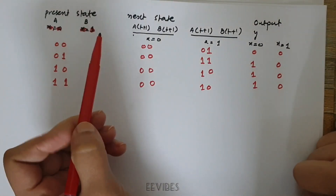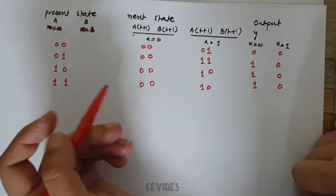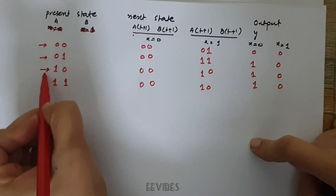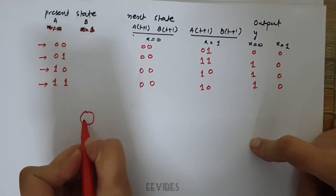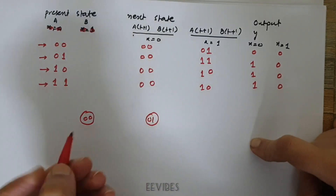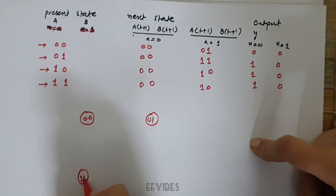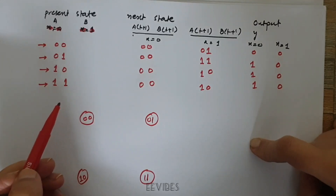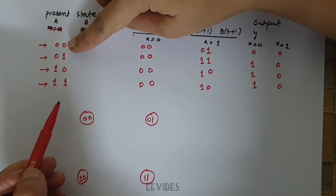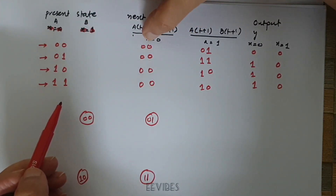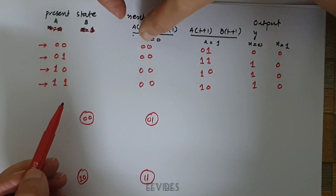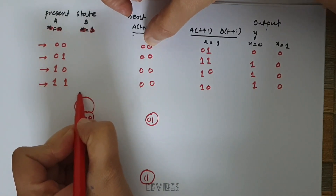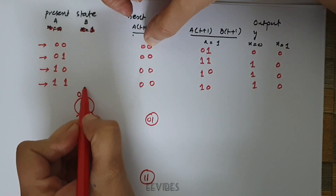Once you have represented the state table in this format, it is much simpler to draw the state diagram from it. The possible states are 1 through 4. Let's draw the circles for these states: 0 0, 0 1, 1 0, and finally 1 1. Now look at the procedure — when you are in the 0 0 state and input is equal to 0, the next state is 0 0, so it loops back to itself.